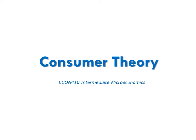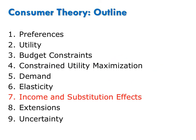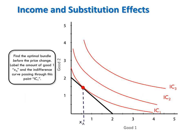This video is part of Consumer Theory. In it, I'll show you how to graph the income and substitution effects of a price change. To graphically illustrate the income and substitution effects of a price change, consider a consumer who initially maximizes her utility by choosing bundle A. Bundle A is the optimal bundle because it represents a point of tangency between the consumer's original budget line and the highest possible indifference curve.